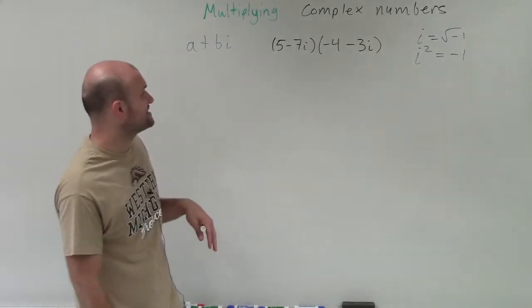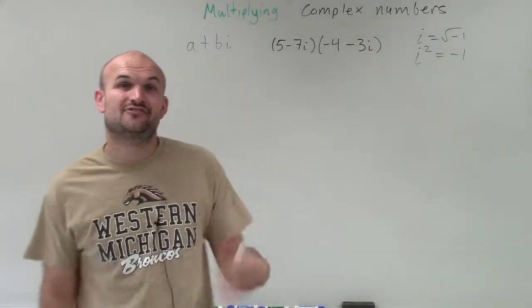Welcome. So here what we have is 5 minus 7i times negative 4 minus 3i.